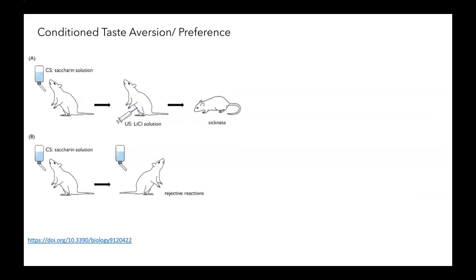There's a well-established assay often used in rodents called conditioned taste aversion. This is illustrated in the picture. You can see that normally a mouse will consume a sweet solution, one with saccharin. However, if following ingesting that solution the mouse is then injected with lithium chloride, something that leads to gastrointestinal distress or sickness, in the future when the mouse sees that same stimulus it will avoid it.